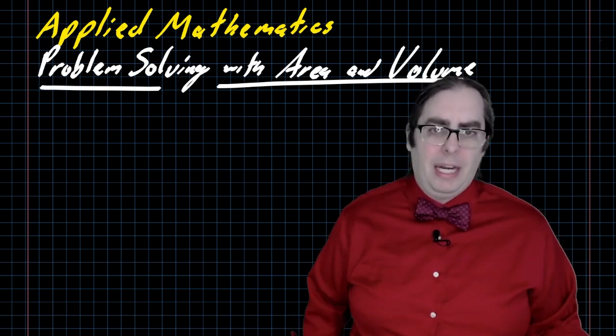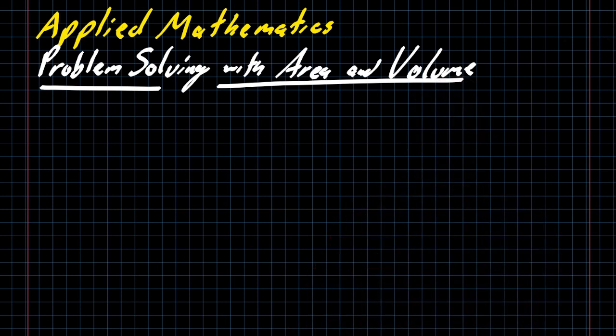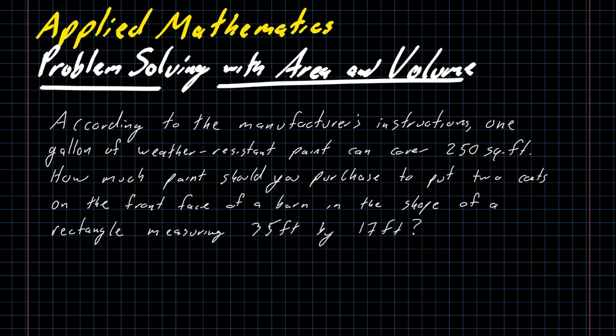Let me get my head out of the way, and we will dive right in. According to the manufacturer's instructions, one gallon of weather-resistant paint can cover 250 square feet. How much paint should you purchase to put two coats on the front face of a barn in the shape of a rectangle measuring 35 feet by 17 feet? There's a couple of things going on here.